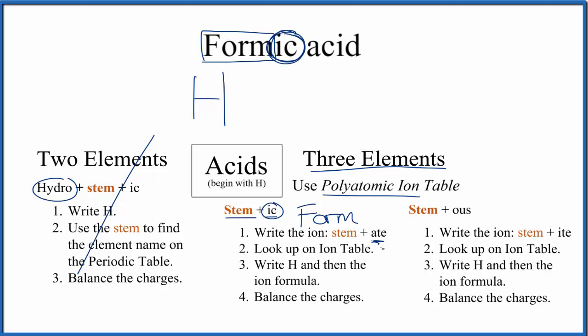First we write the stem, that's the F-O-R-M, and then the ic on the end. This ic right here we replace that with ate, that gives us the formate ion. So now we can look this formate ion up and we'll be very close to having the formula for formic acid.